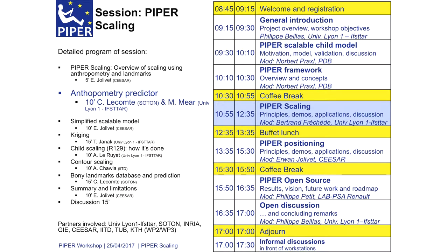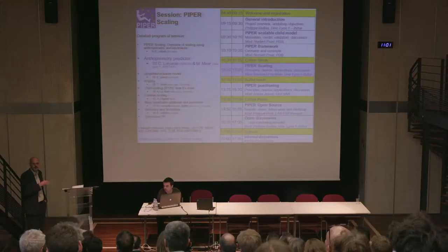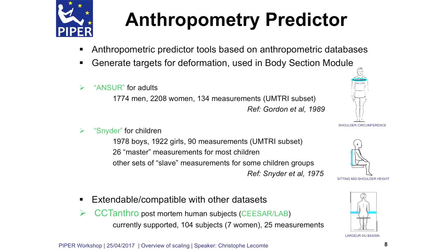My background is in applied mathematics, so I'm an engineer, and I've been working on the statistical aspects of the Piper project, so that's what I'm going to present. If we look at the anthropometric predictor tools that we have, they are based on anthropometric databases, and we generate the targets for deformation that are used in the body section or a scaling constraint module.